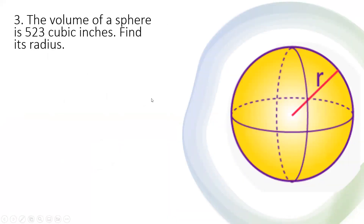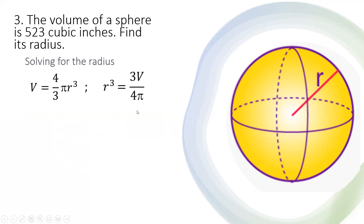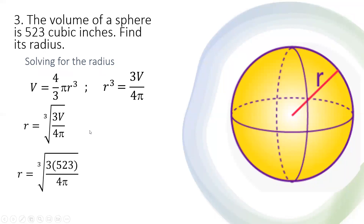Practice problem number three: the volume of a sphere is 523 cubic inches. Find its radius. Solving for the radius: r cubed equals 3V over 4 pi, so r equals the cube root of 3V over 4 pi. Substituting the values, r equals the cube root of 3 multiplied by 523 over 4 pi. So r equals 5 inches.